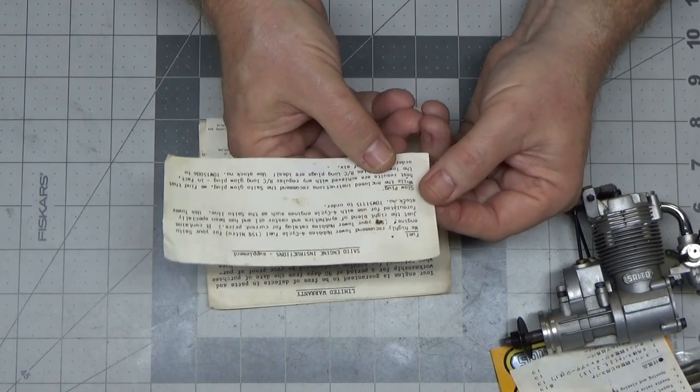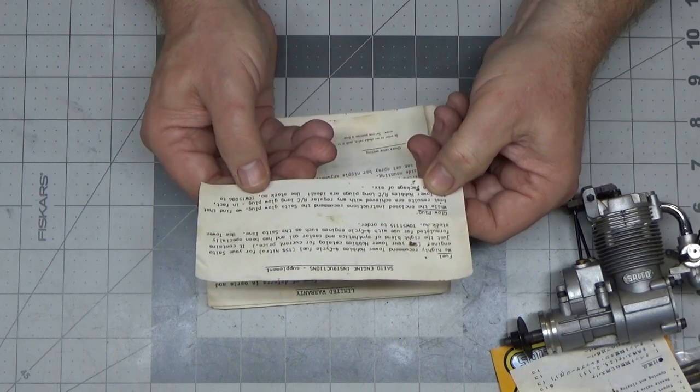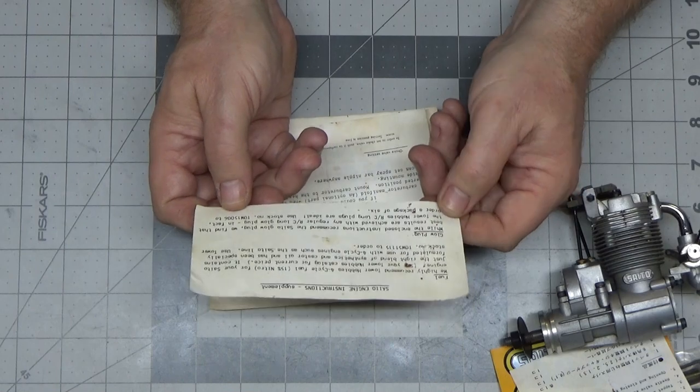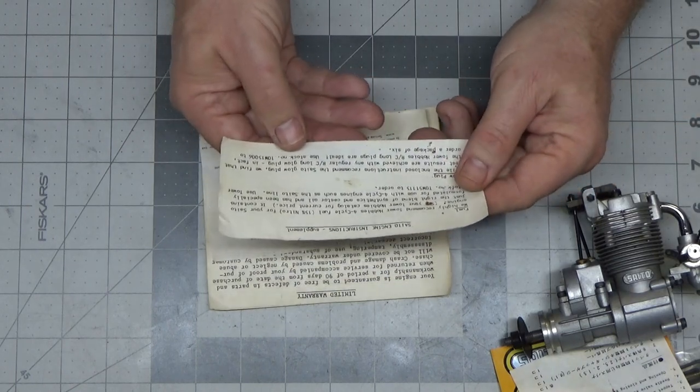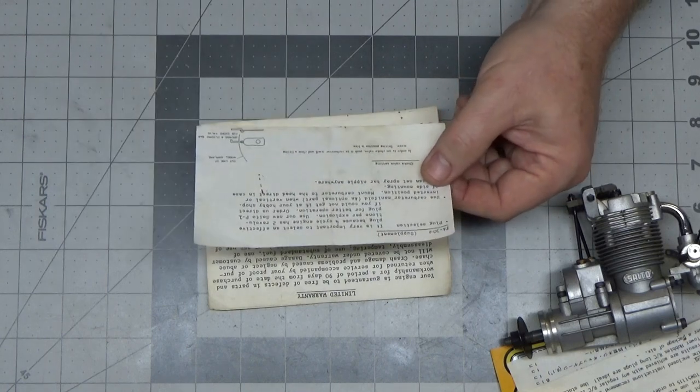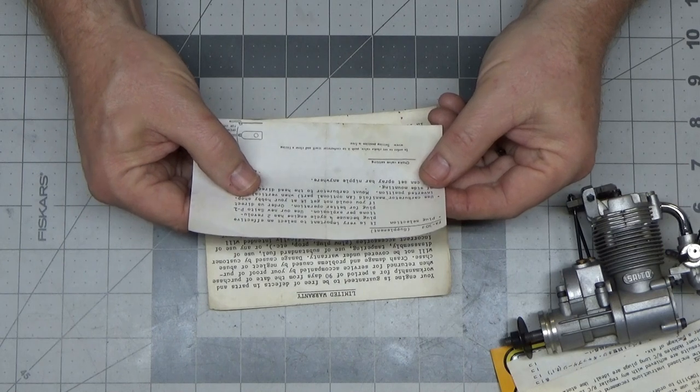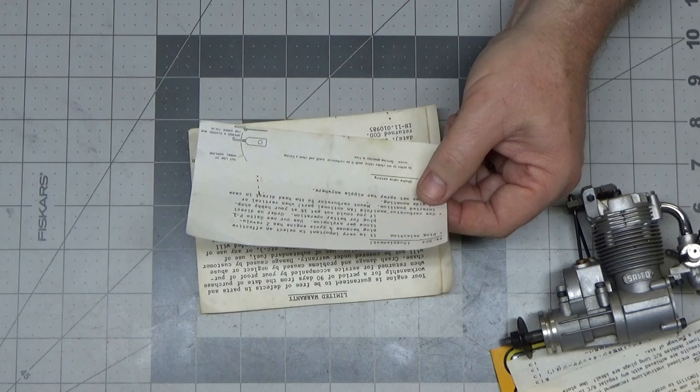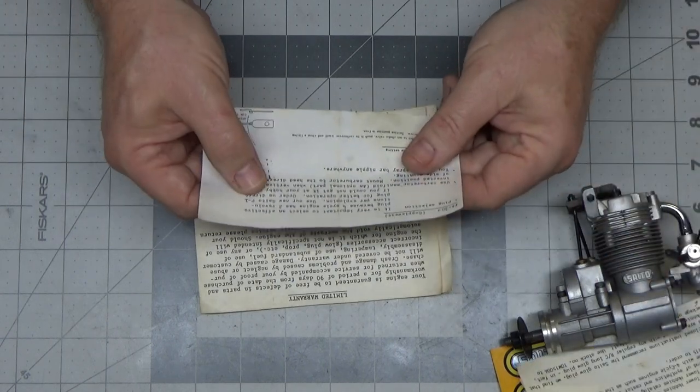The next thing here is it says glow plug. While the enclosed instructions recommend the Saito glow plug, we find the best results are achieved with any regular RC long plug. In fact, the Tower Hobbies RC long plugs are ideal, exclamation point. Use stock number blank blank to order a package of 6. So here this Saito supplement, they're recommending not even using the Saito glow plug, they're saying just a regular long RC plug which I think is interesting. So now let's look at this other supplement. Here's another FA30 Mark II supplement, plug selection. It is very important to select an effective plug because 4 cycle engine has 2 revolutions per explosion. Use our new Saito P1 plug for better operation. Order us direct if you could not get it at your local hobby shop. So see that's interesting because you got two different supplements here. One is saying use a regular RC plug but don't use the Saito plug, and this one's saying use the Saito P1 plug.